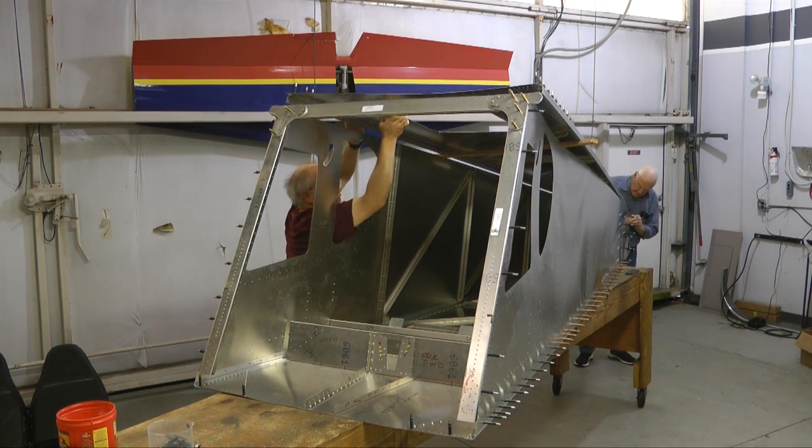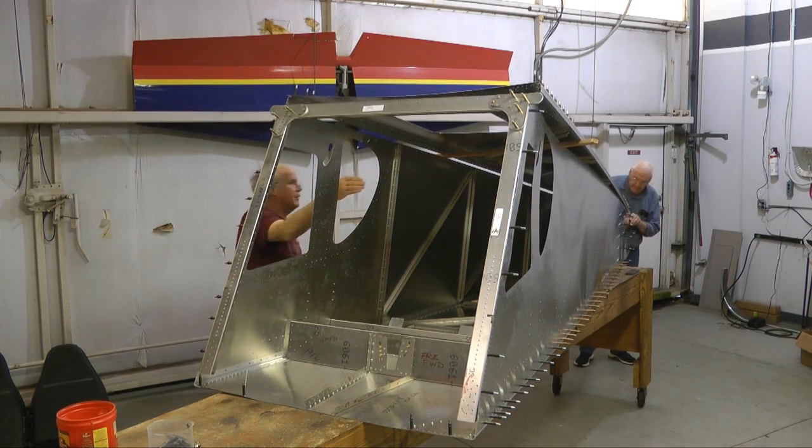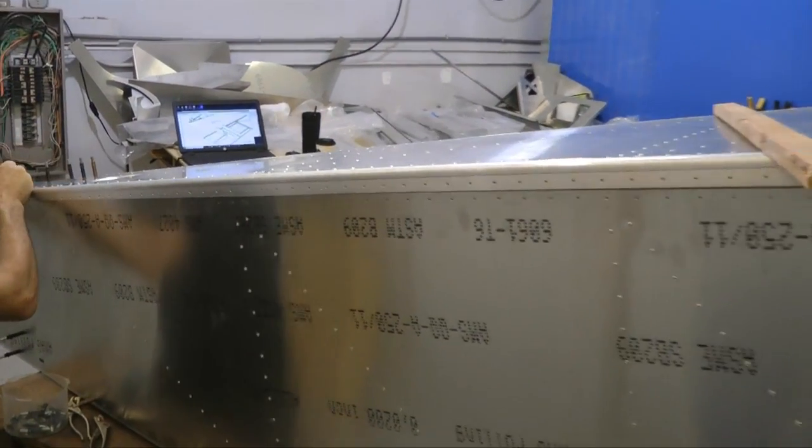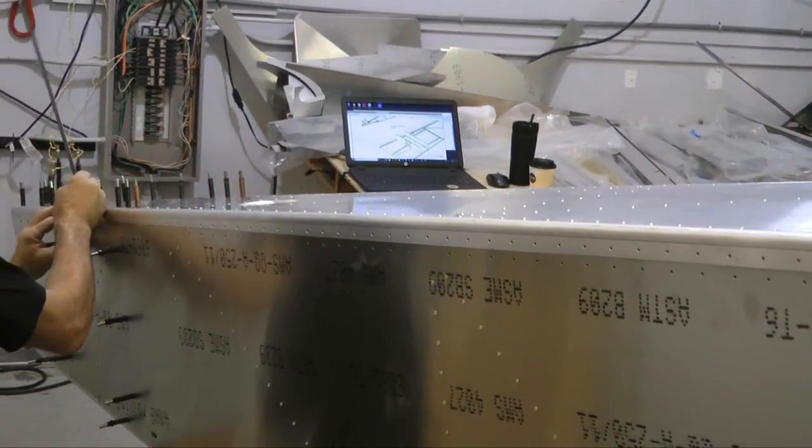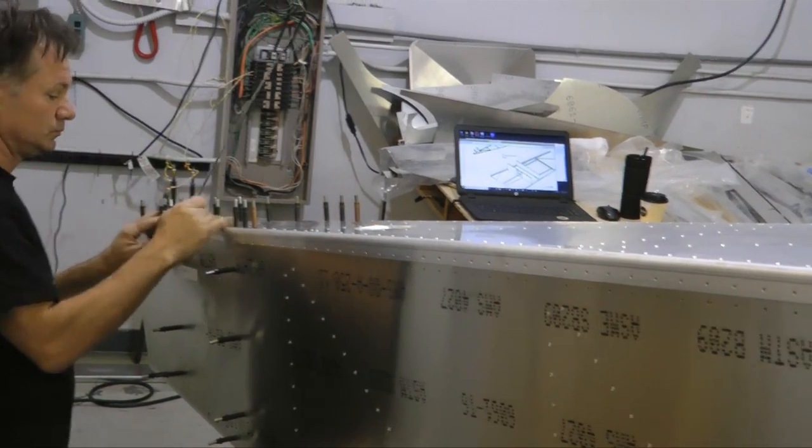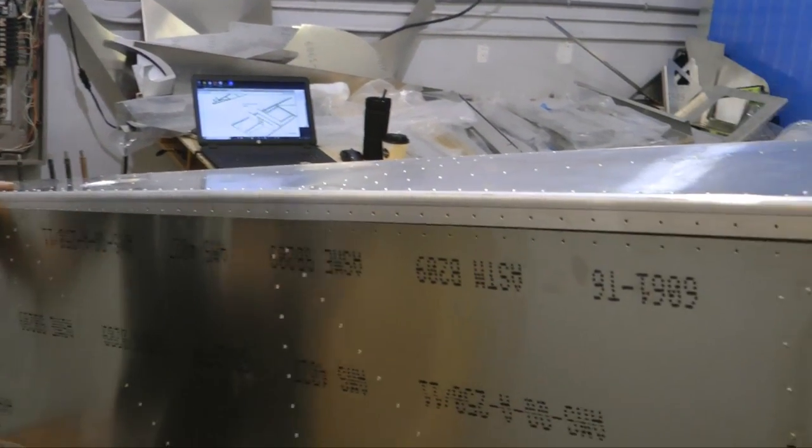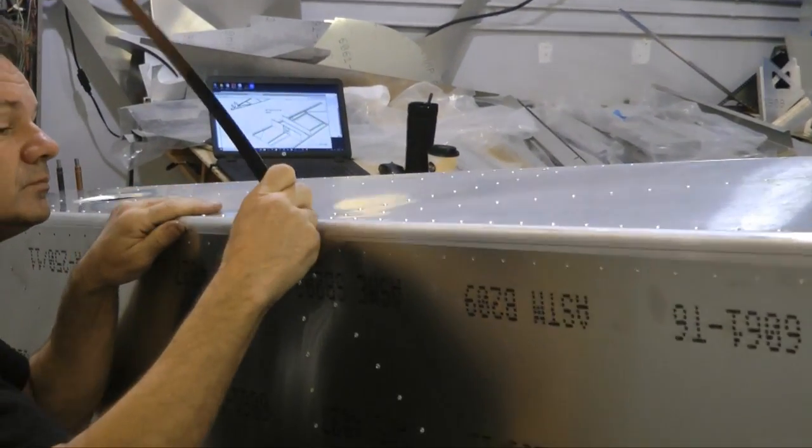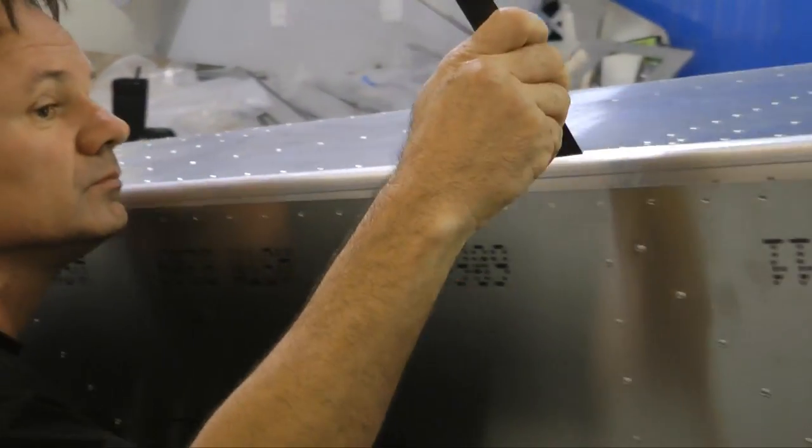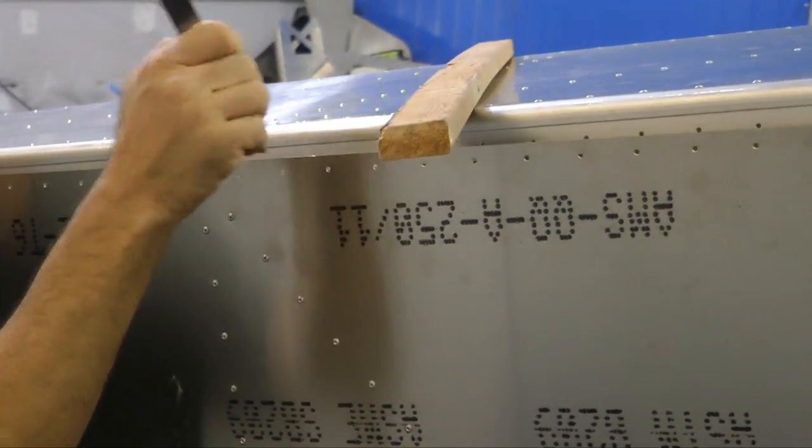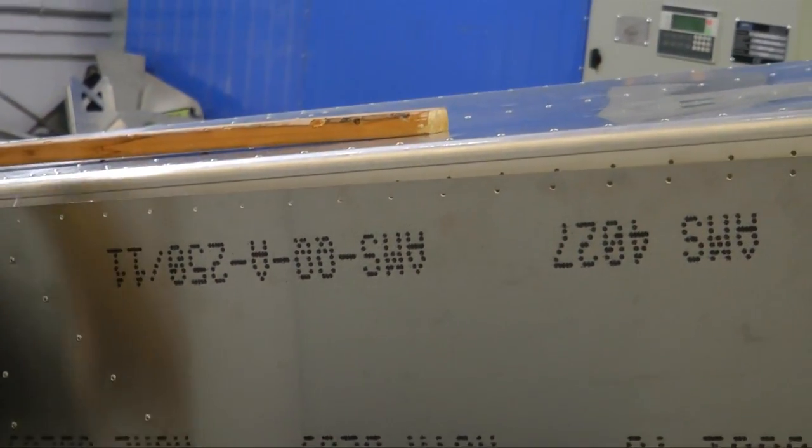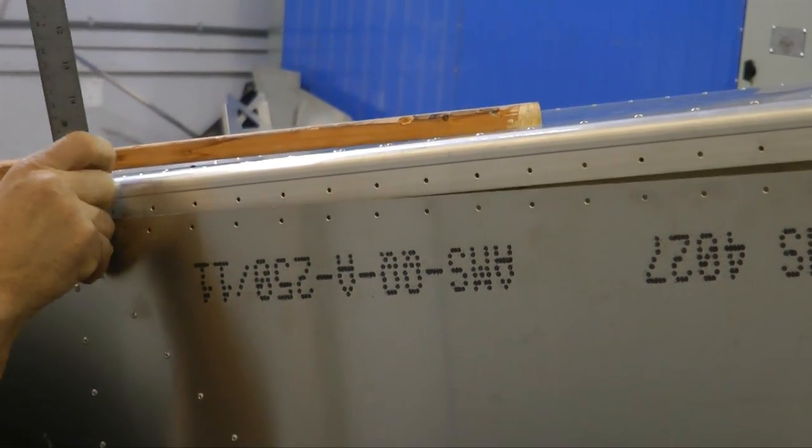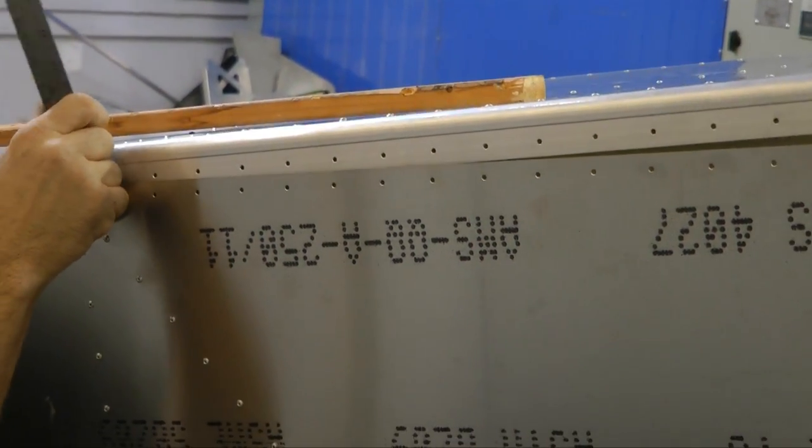This topskin was made similar to the bottomskin. It was simply a sheet with two longerons riveted to either edge along with some L angles. And note here we're using a thin stainless steel ruler to help get the skin in proper position. And we'll go ahead and Cleco after we have all of those holes lined up.